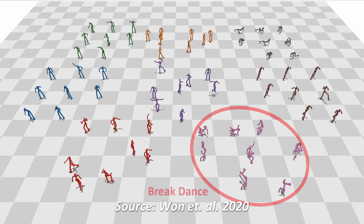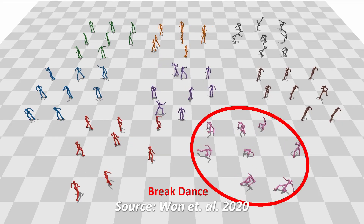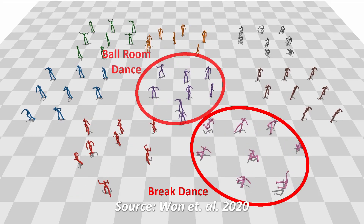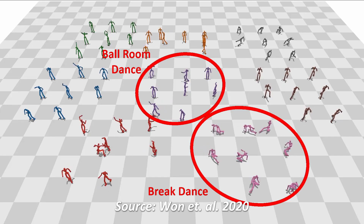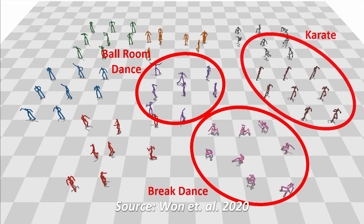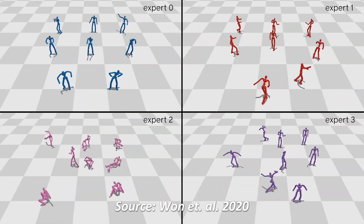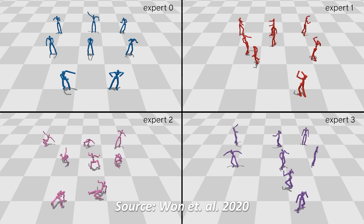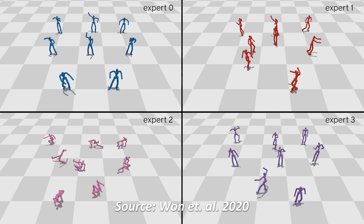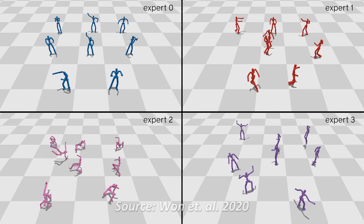Here you can see a cluster of breakdancing motions. Here is another cluster of people dancing, people doing karate, etc. Each individual cluster is a specific category of motion produced by an expert neural network.